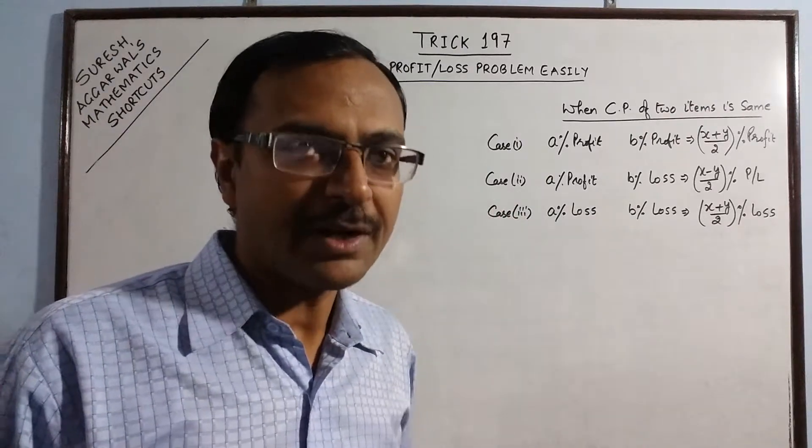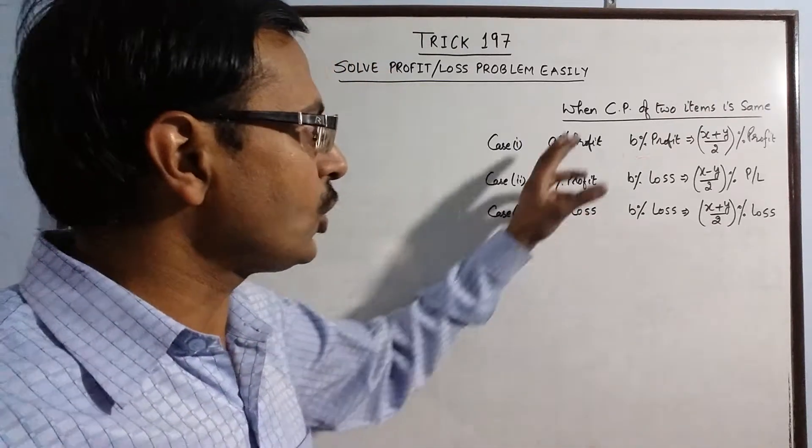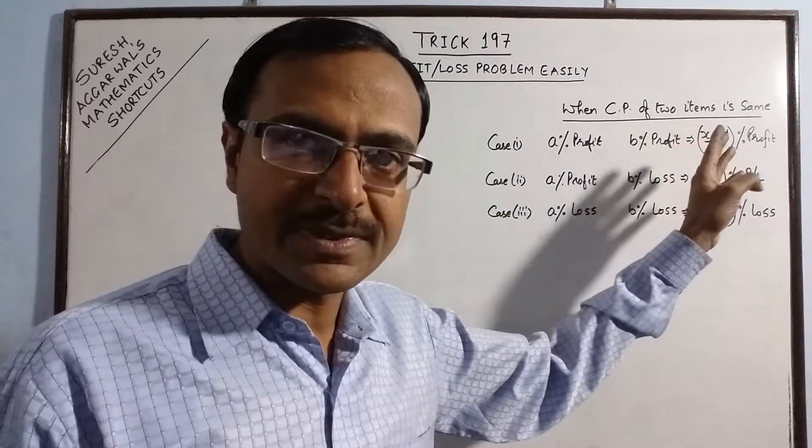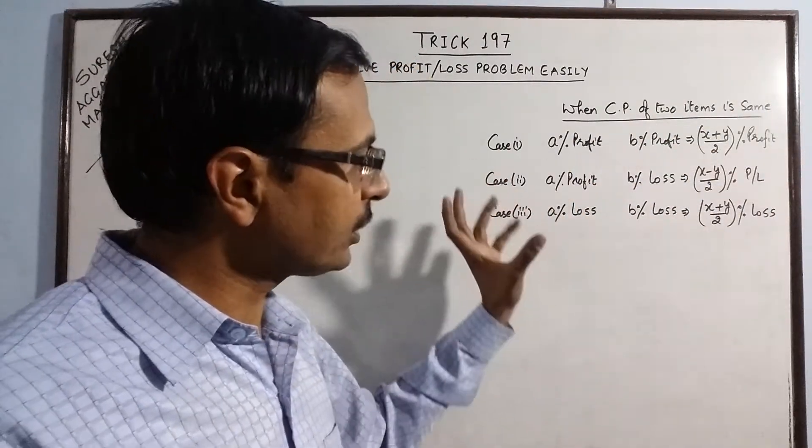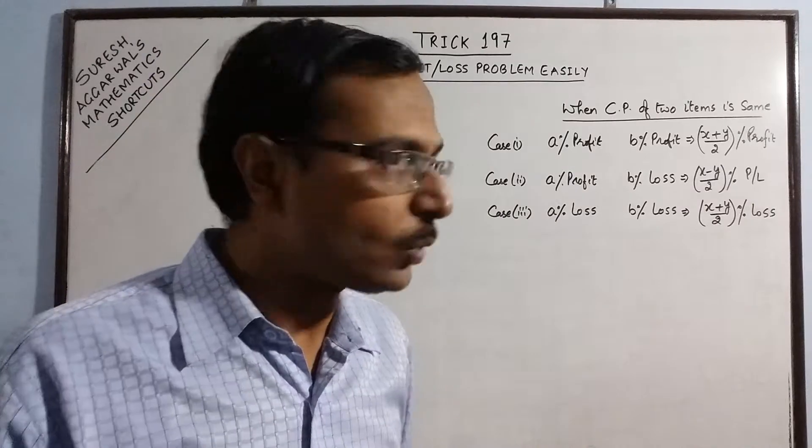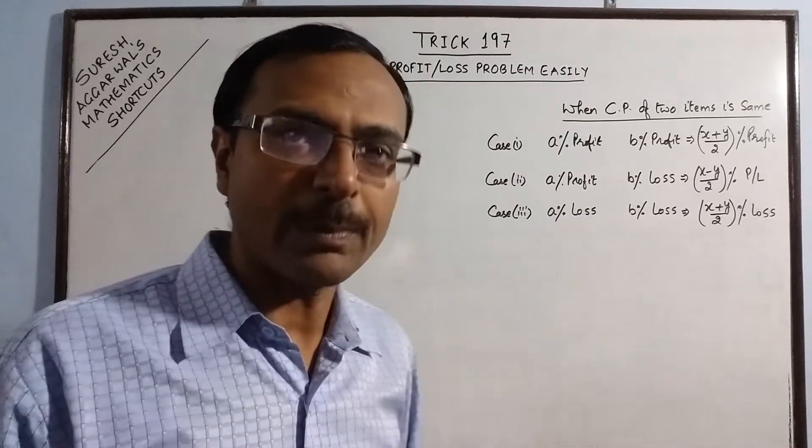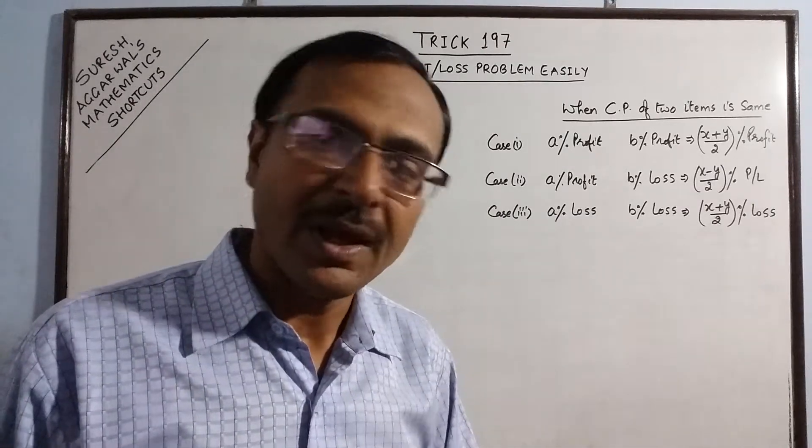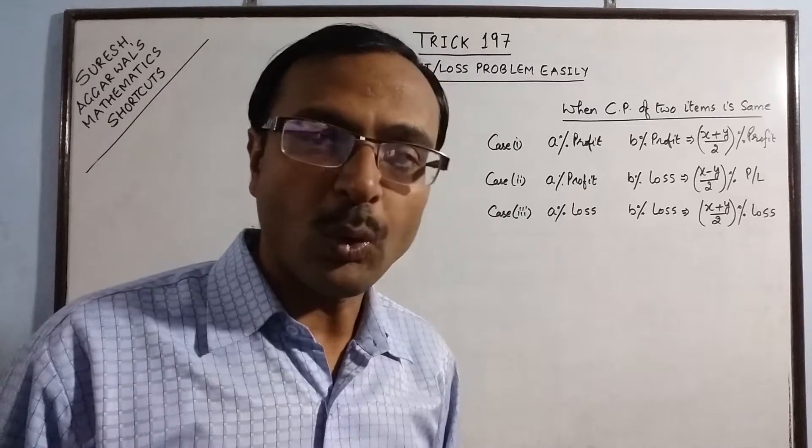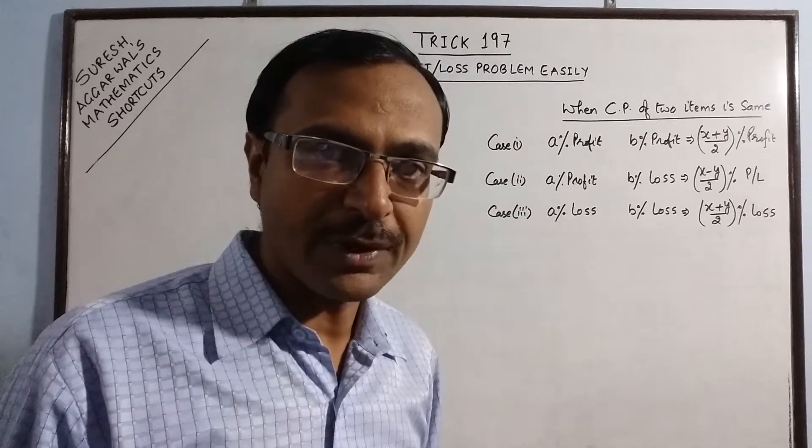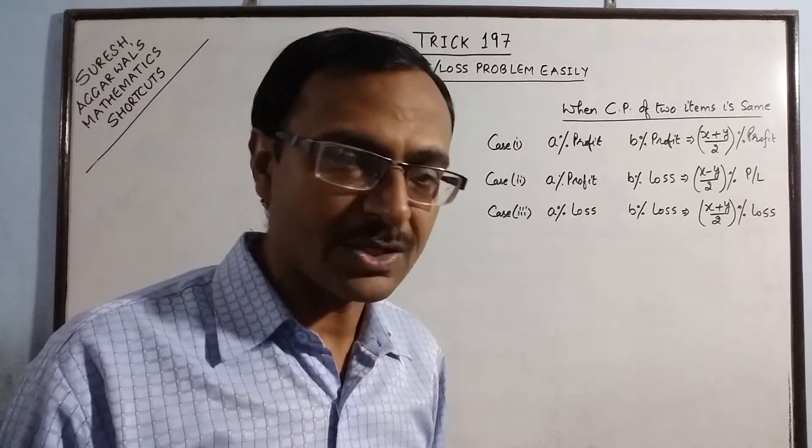This time a special kind of problem where the cost price of two items is the same and both items are sold at a particular percentage profit or percentage loss. So we need to find the overall percentage profit or overall percentage loss.